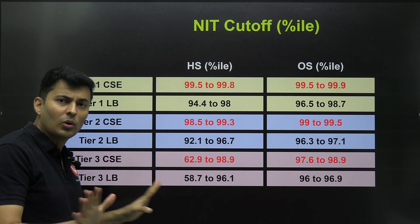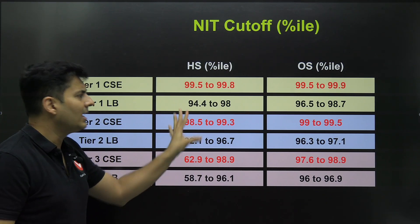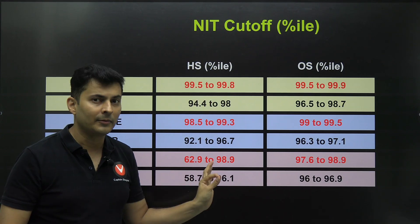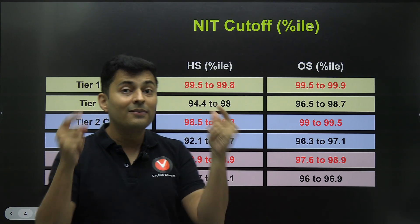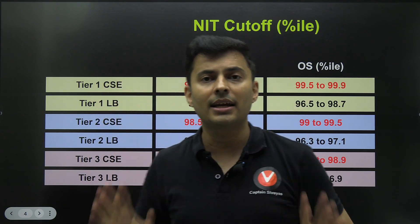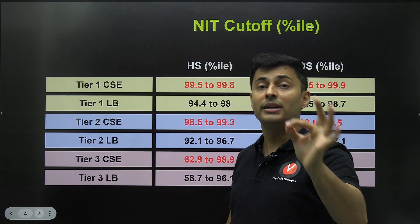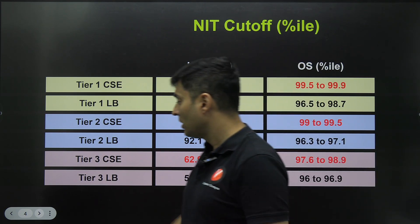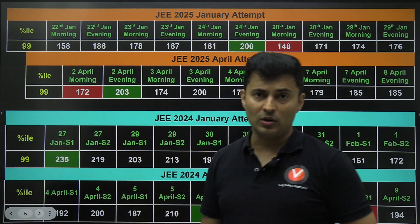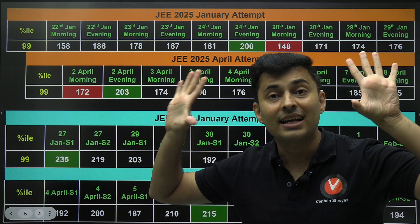If you're okay with some other branch at a good college, then still 97 to 98 percentile is needed. First of all, fit this in your head for getting into NITs. I'm pretty sure many of you didn't know about this — let me know in the comments if you were aware.